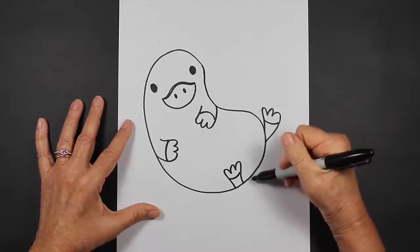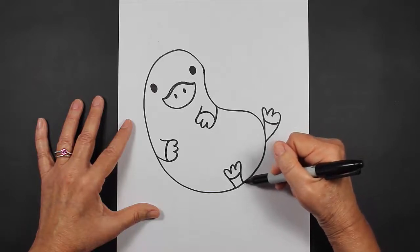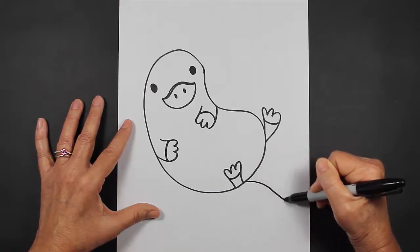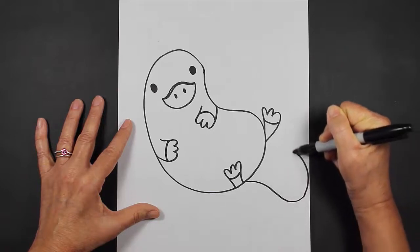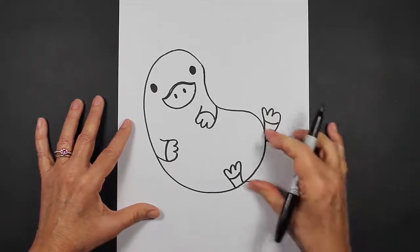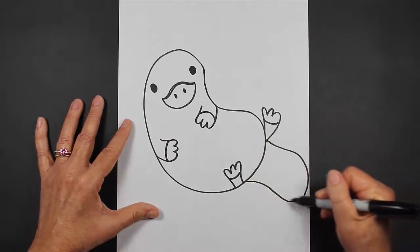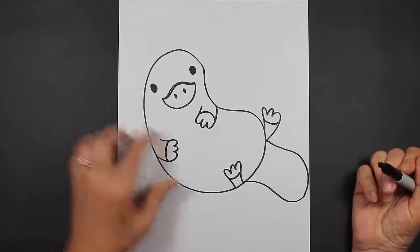For his tail, they have really long and flat tails. So we come out, we come around, and we come back in. If I had more paper, if my design wasn't going to go off the paper, I'd maybe even make this a little bit longer.